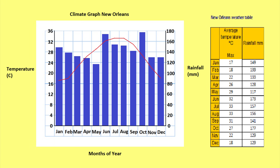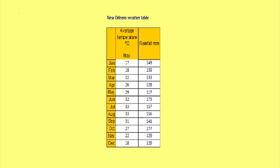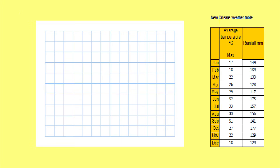Today I am going to show you how to construct a climate graph. First we need some climate data. In the table on the screen there is a data table for New Orleans in the United States. This data has maximum average temperature data measured in degrees Celsius and rainfall data measured in millimetres.